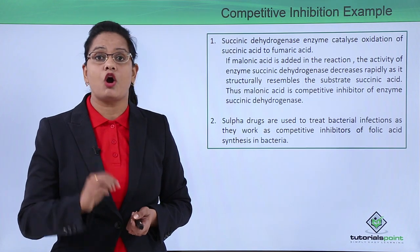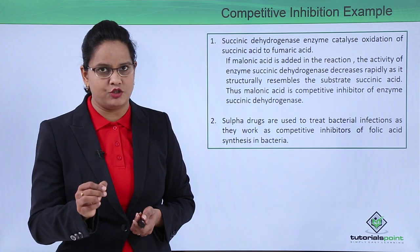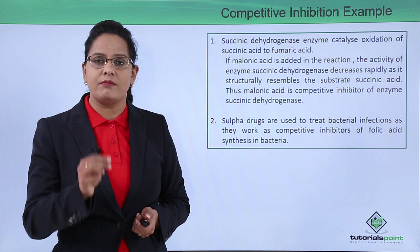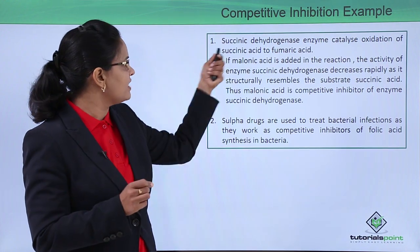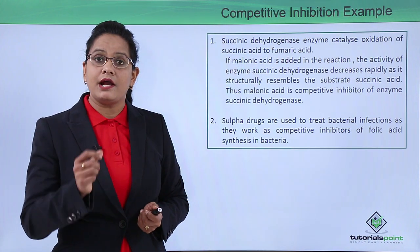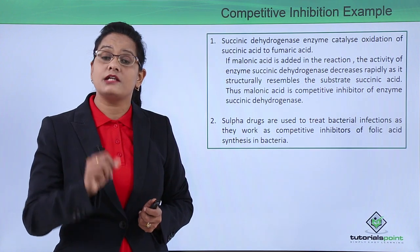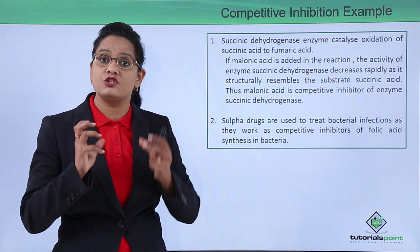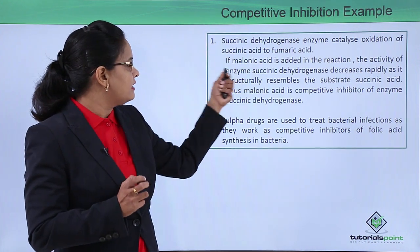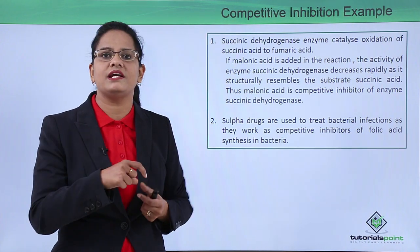A common example of competitive inhibition is the inhibition of succinic dehydrogenase. This enzyme catalyzes the oxidation of succinic acid into fumaric acid. If malonic acid is present in this reaction, it acts as a competitive inhibitor of succinic acid because it structurally resembles succinic acid, so malonic acid binds to the active site of succinic dehydrogenase.